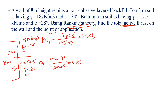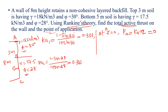Next step: we identify points A, B, and C. At z equals 0, that is point A. The pressure P equals Ka into gamma into z, so at z equals 0, P equals 0. At z equals 3 meters, we have the interface between the two soil layers.